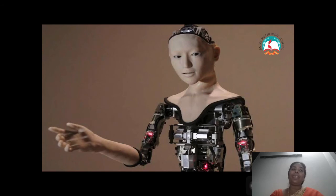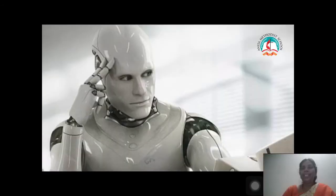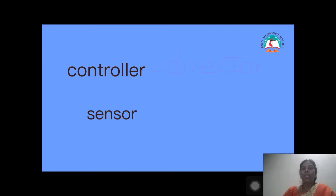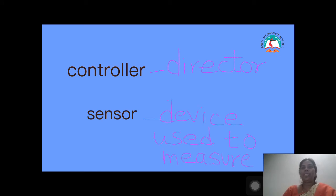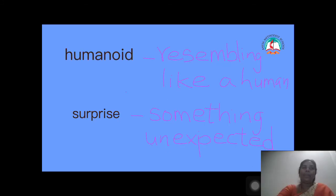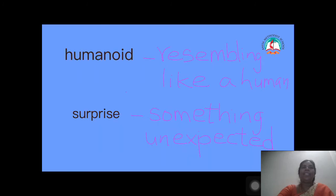These robots are used in scientific studies. Let me teach you important words and meanings from this lesson. Controller — a director. Sensor — a device used to measure. Humanoid — resembling a human. Surprise — something unexpected.